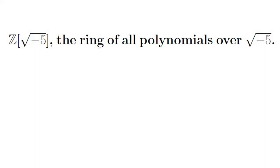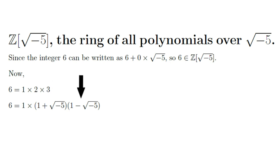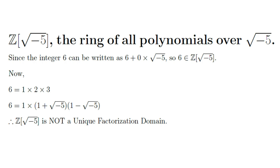Let's take the ring of all polynomials over square root of negative 5. The two expressions of 6, which belongs to this ring, have the same number of elements. But here 2 is not an associate of 1 plus square root of negative 5 or 1 minus square root of negative 5. Similarly, 3 is also not an associate of 1 plus square root of negative 5 or 1 minus square root of negative 5. So the second condition of a unique factorization domain is not satisfied, and hence this ring is not a unique factorization domain.